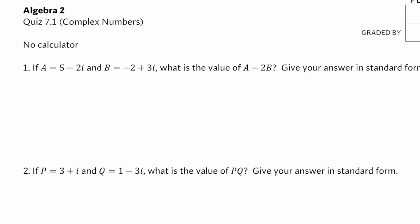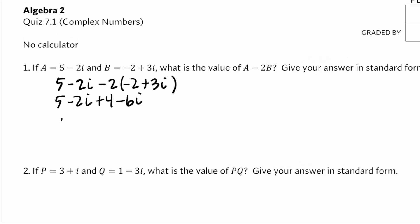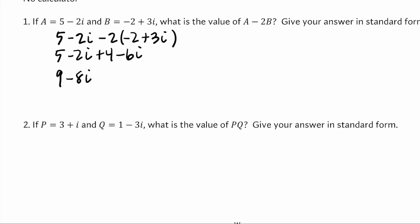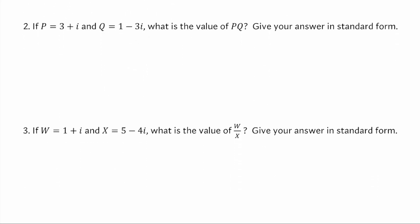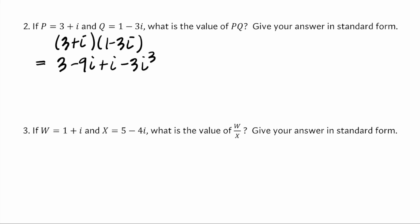For form B, we'll do a minus 2b again. That'll be 5 minus 2i minus 2 times negative 2 plus 3i, giving us minus 2i plus 4 minus 6i, so 9 minus 8i. Then p times q is going to be 3 plus i times 1 minus 3i. With some FOILing: 3 times 1, 3 times negative 3i, i times 1, and i times negative 3i is negative 3i squared. So 3 minus 3i squared is 3 plus 3, giving us 6 minus 8i.